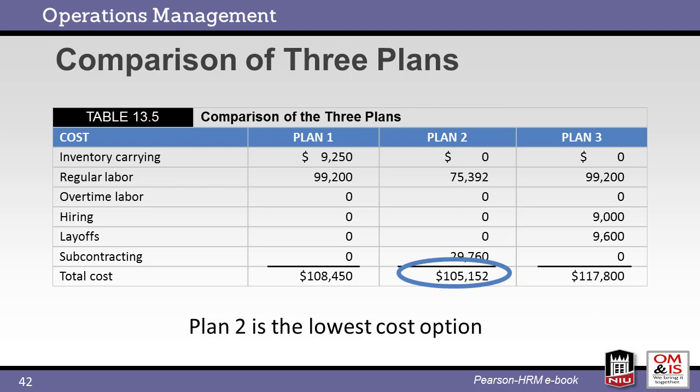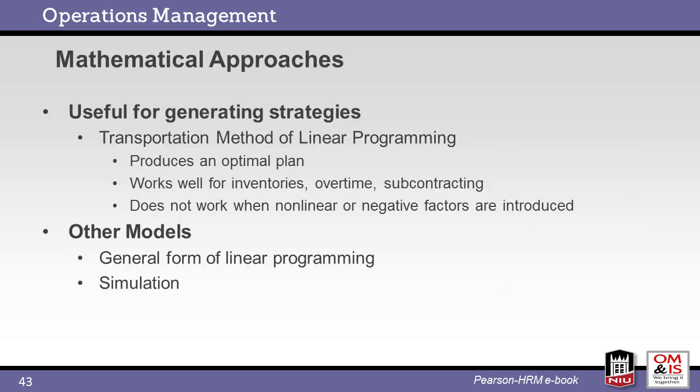In summary, reviewing the three scenarios, we find that Plan 2, using subcontractors, meets the customer demand with the lowest cost — as noted earlier, this is the goal of aggregate planning. Other approaches include the transportation method of linear programming, which produces an optimal plan but does not work with nonlinear models. Other methods include general linear programming and simulations, like the simulation used for class.